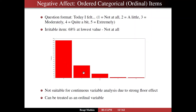On slide 12, the histogram for the negative affect item irritability is shown. Participants responded to 'Today I felt irritable' using the five-category scale. At one of the first time points, 68% answered 'not at all.' This strong floor effect makes the variable unsuitable for continuous variable analysis, but it can and will be treated as an ordinal variable in our analyses.